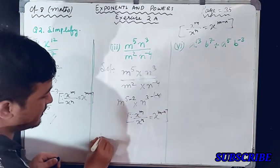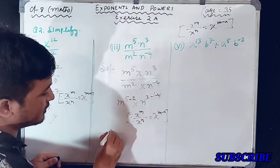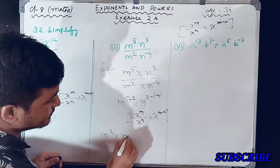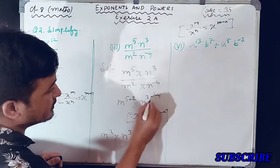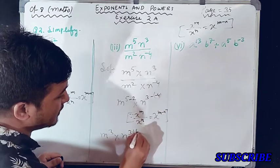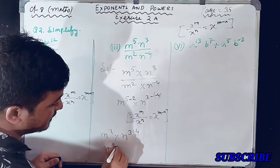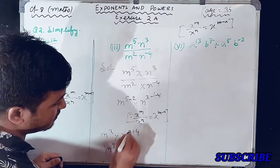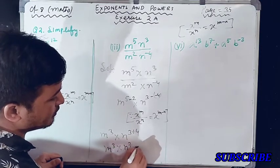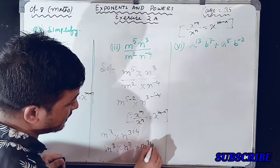Your answer will be m raised to the power 5 minus 2, which gives 3. And 3 minus minus 4 gives plus 4, so n raised to the power 7. Answer: m raised to the power 3 into n raised to the power 7, that is m³n⁷.